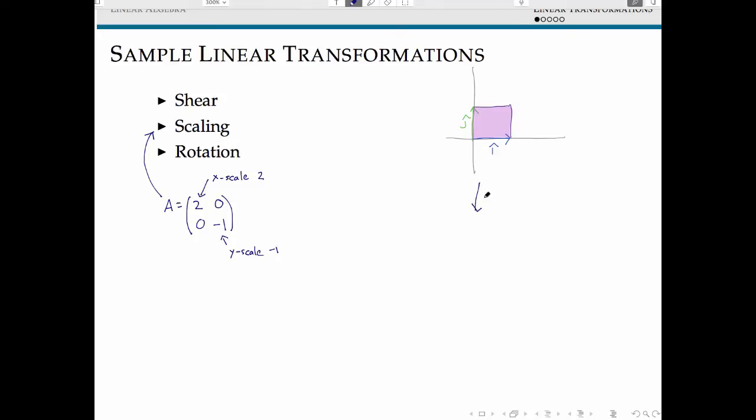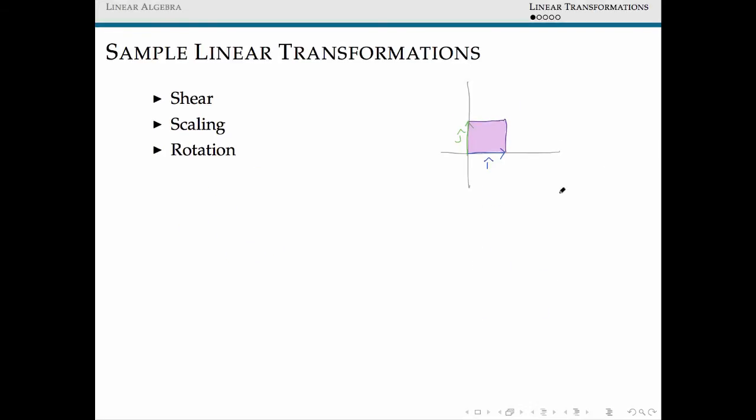What this should look like, transforming our unit square by this matrix A, is it will stretch out our box by a factor of 2 in the x-direction and flip our box over by -1.